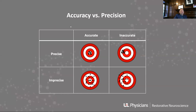Two concepts that are important but sometimes at odds with each other are accuracy and precision. Ideally, you want both — always hitting the center of the bullseye. You could have something that is accurate but imprecise, which means on average you get to the center of the bullseye, but you have a lot of scatter in how you deliver it.